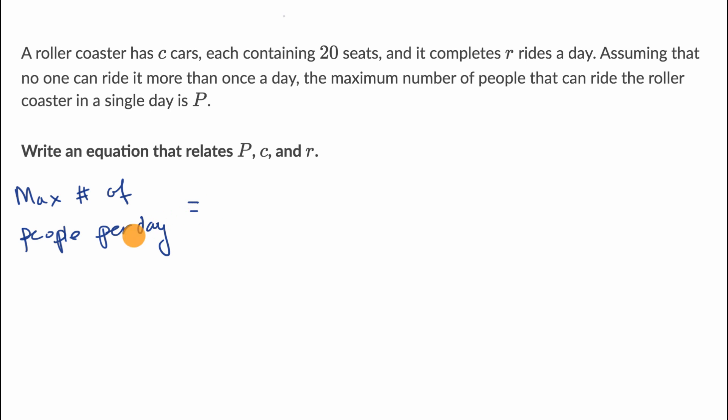And so that's going to be equal to the number of cars in our roller coaster. So number of cars times the max number of people per car. So this would just tell you the maximum number of people per ride.